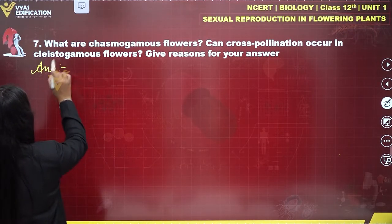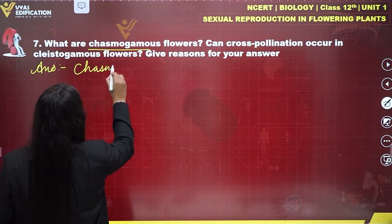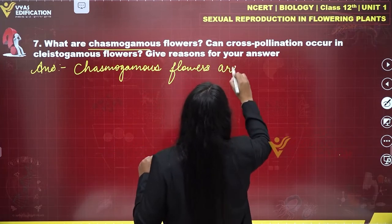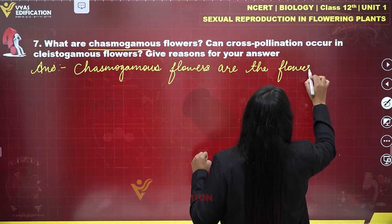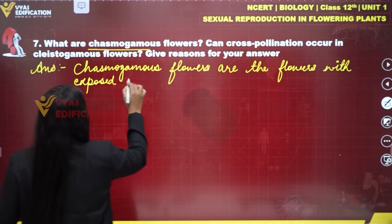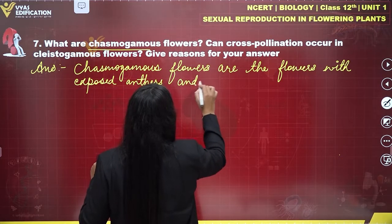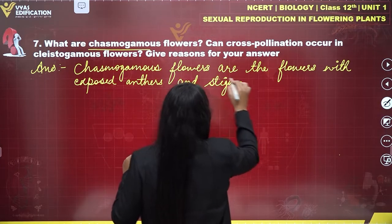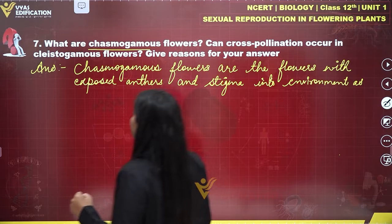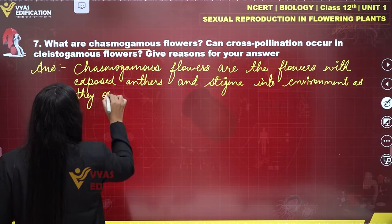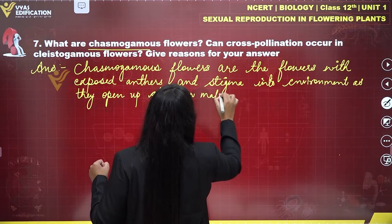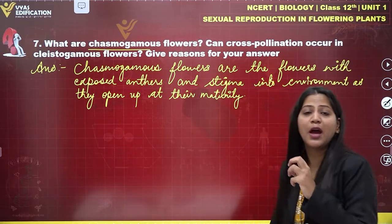So the chasmogamous flowers are the flowers with exposed anthers and stigma into the environment, as they open up at their maturity. Chasmogamous flowers are the flowers which have exposed anthers and stigma into the environment at their maturity.